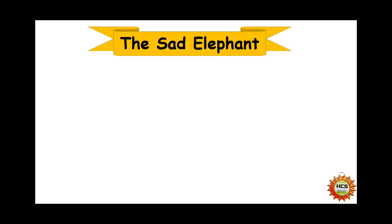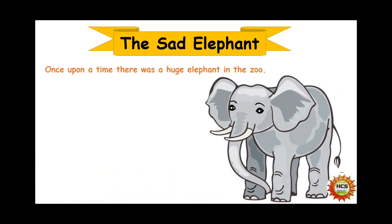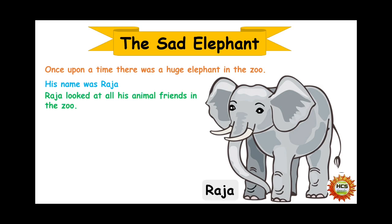Now we will start our story. Listen to me very carefully. You can also close your books and only look at the video with proper concentration. Once upon a time, there was a huge elephant in the zoo. His name was Raja. Raja looked at all his animal friends in the zoo.